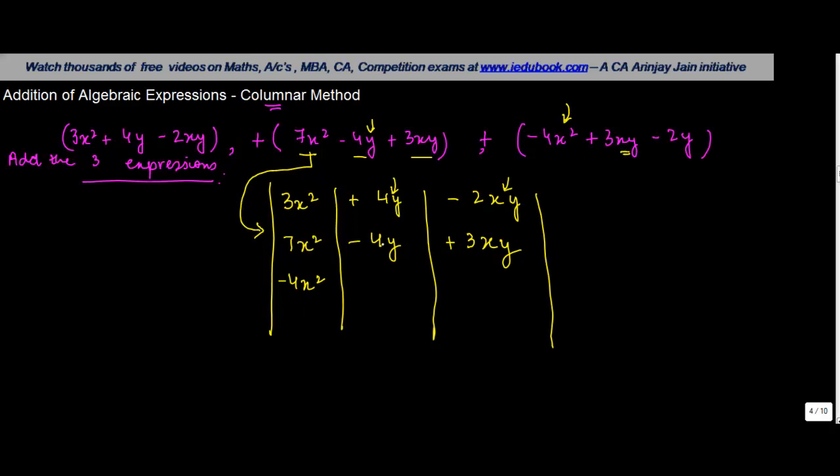Now please note that this column represents y, this column represents xy. So this has to come in column number 3 plus 3xy. So minus 2y, obviously, this goes here.